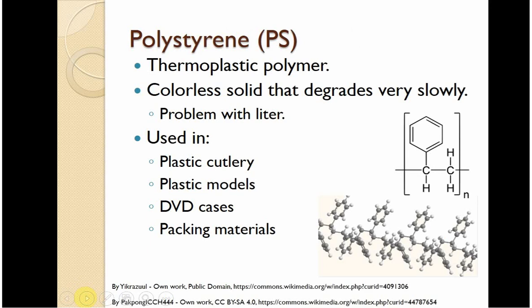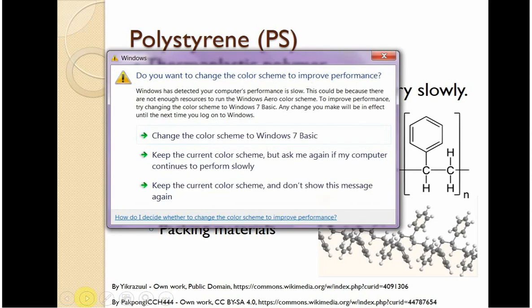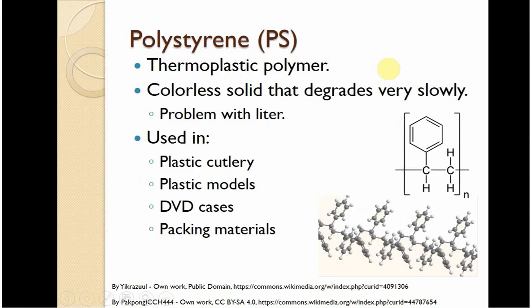Polystyrene — you can tell that a lot of these are thermoplastics. Here we've got a colorless solid. It's going to be really stable and doesn't degrade very fast, which unfortunately means it sticks around and is part of litter. It's used in plastic cutlery, plastic models, DVD cases, packing materials — all of these things that you typically don't know what to do with when you're done. What do you do with packing materials or plastic forks from the cafeteria? Typically it goes in the trash. Styrene is this circular aromatic molecule, so you typically have the aromatic molecule sticking up and below, interacting with more side chains.